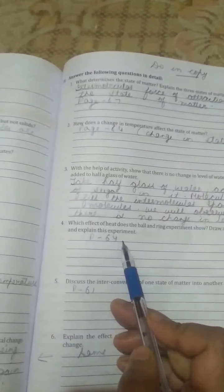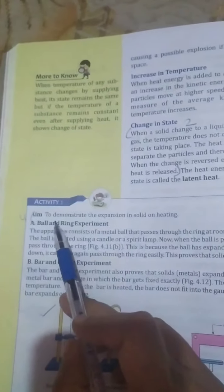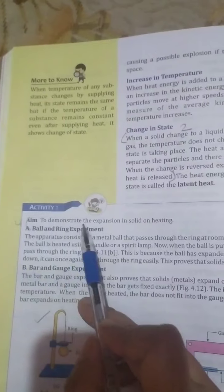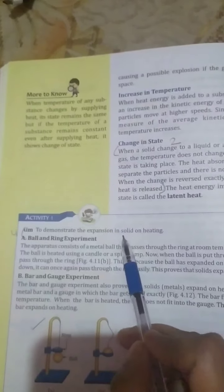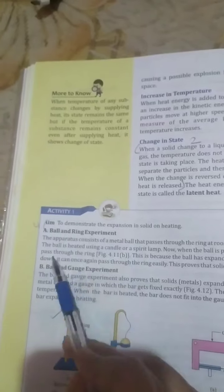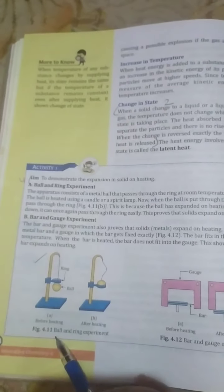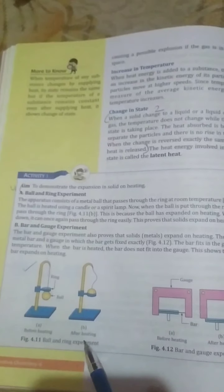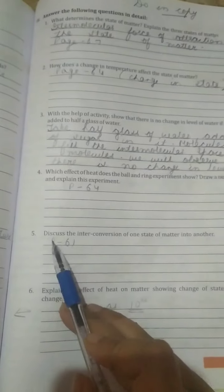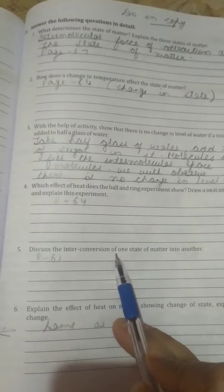Draw a neat and labeled diagram and explain the experiment. For this, we have to open page number 64. You have to write aim: to demonstrate the expansion in solid on heating. Write 'ball and ring experiment' up to here and draw the diagram 4.11, that is ball and ring experiment. Next, fifth question is: discuss the interconversion of one state of matter into another.